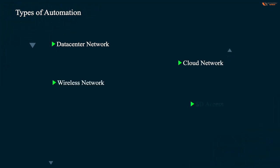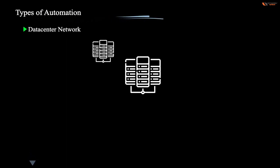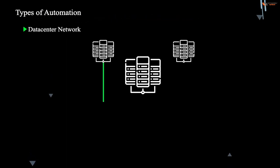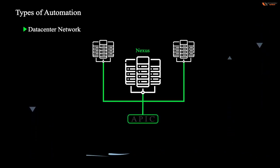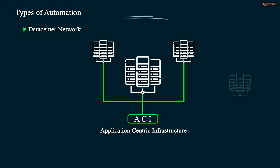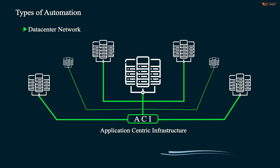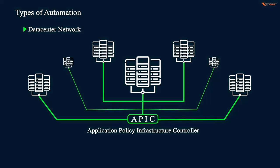Network automation is going well right now in data center networks. In the data center there are many advanced, high-end devices called Nexus, and all these devices are controlled by one controller which is called APIC — also known as ACI, Application Centric Infrastructure. So if you have many devices, they can all be controlled in the data center with this technology.